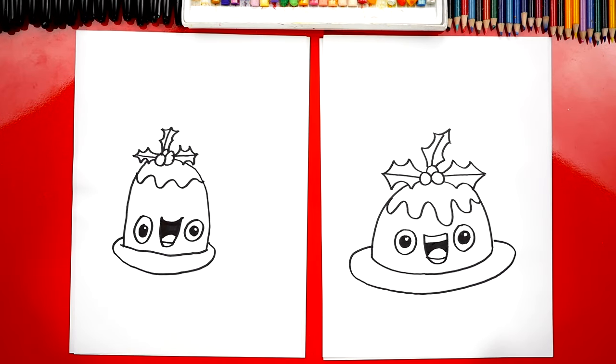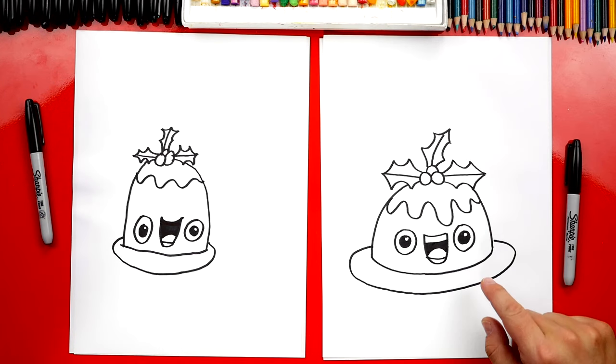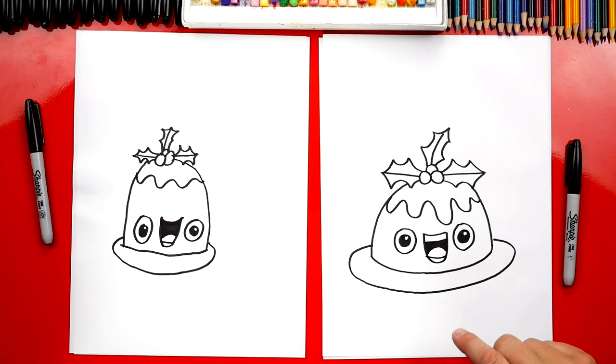All right Austin we did it. We finished drawing our figgy pudding except we're not completely done. What do we still need to do? Color it. Yeah we need to color it. This part we're gonna fast forward again. But at the end you guys can pause the video to match the same coloring. You ready to fast forward?